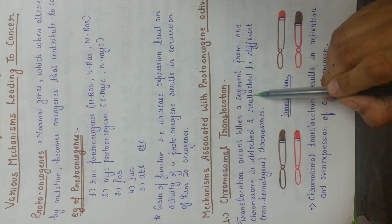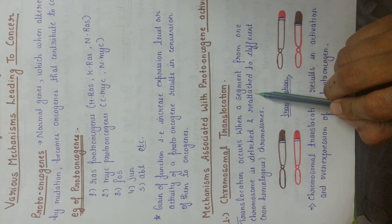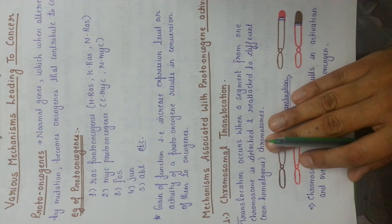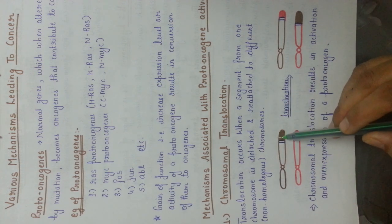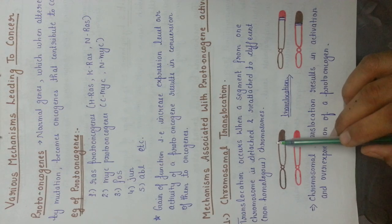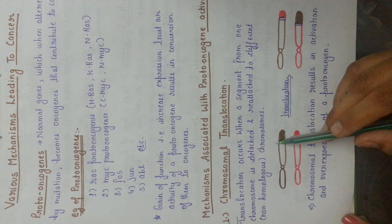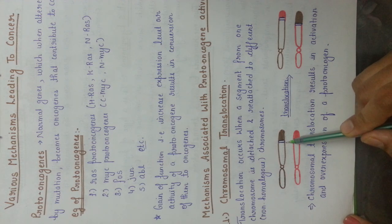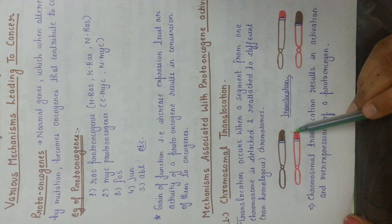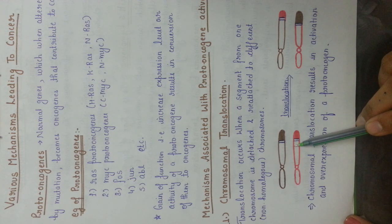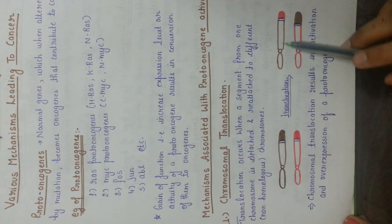Translocation occurs when a segment from one chromosome is detached and reattached to a different non-homologous chromosome. We know that chromosomes are present in homologous pairs, but in translocation, a segment of one chromosome — a particular gene or different genes — will be cut or detached from that chromosome and transferred to another chromosome that is non-homologous in nature.